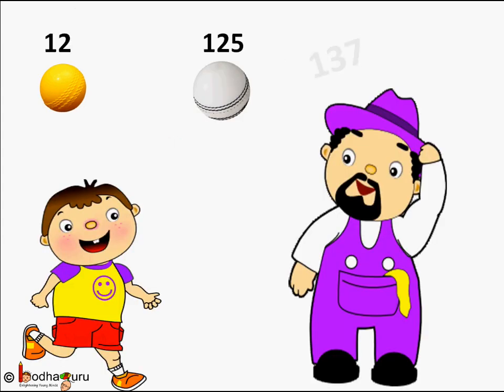So Amun needs to pay Rs 12 plus Rs 125, that is equal to Rs 137, for getting one yellow rubber ball and one white leather ball. And the shopkeeper was very happy with his correct calculations and gave him one yellow rubber ball and one white rubber ball for a total of Rs 137.